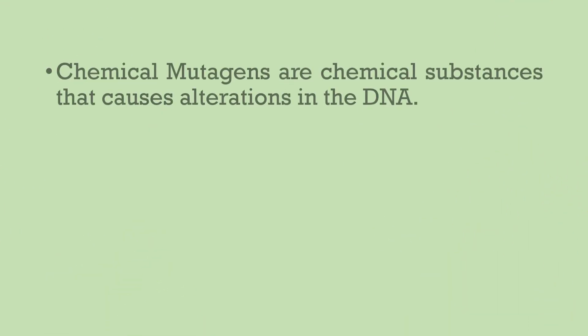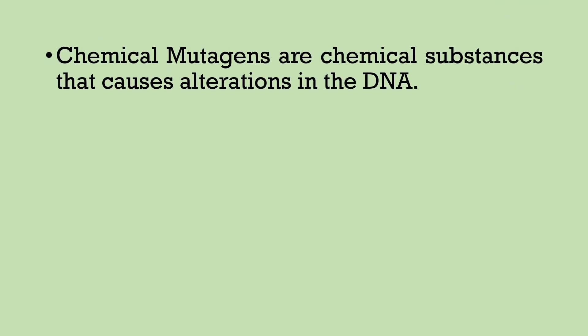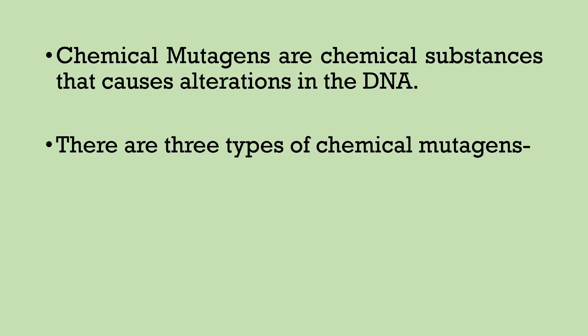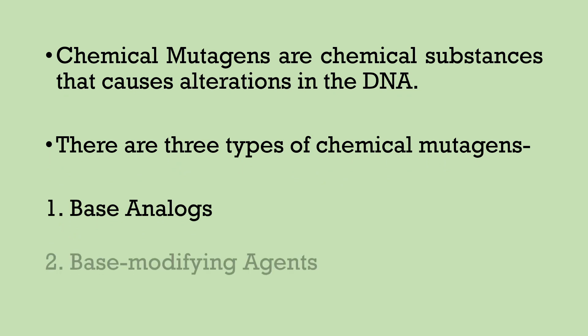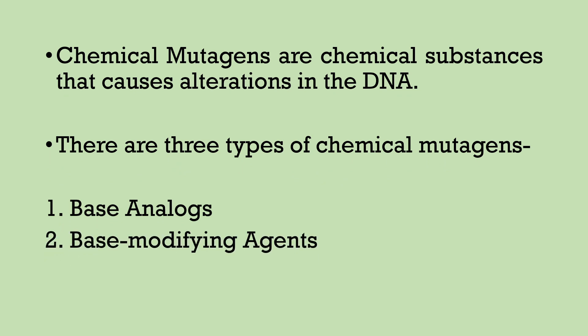Chemical mutagens are chemical substances that cause alterations in the DNA. There are three types of chemical mutagens: first, base analogs; second, base modifying agents; third, intercalating agents. Base analogs and intercalating agents depend on replication, whereas base modifying agents can induce mutations at any point of the cell cycle.